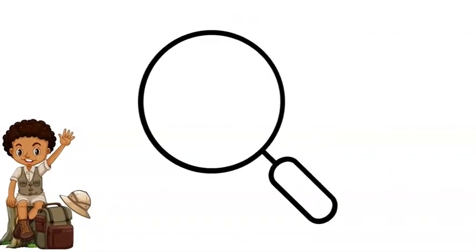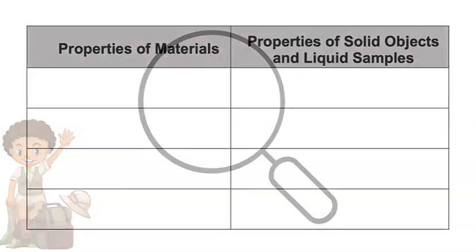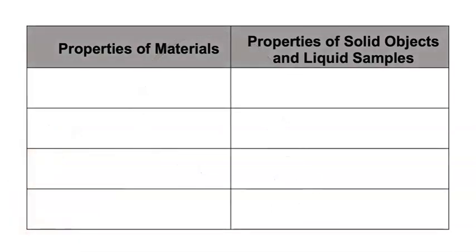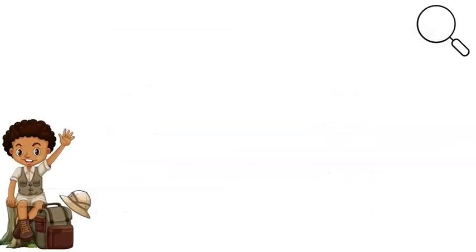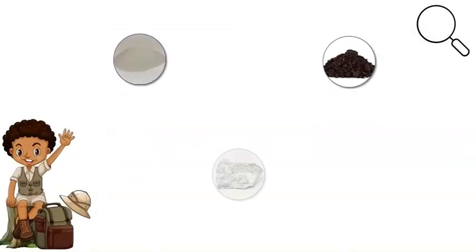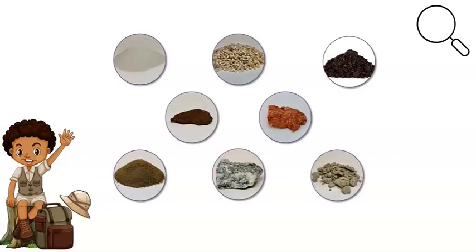We will use a magnifying glass to observe each sample. We will describe each sample's properties. We can look at the color, texture, flexibility, or hardness. We can also observe the size, shape, weight, and volume. Wow, we have so many properties we can observe. Let's get started. Look at all the samples my friend brought to share. Whoa, my friend has a lot of samples. How will we decide which one to start with? I can't decide, but I have an idea.